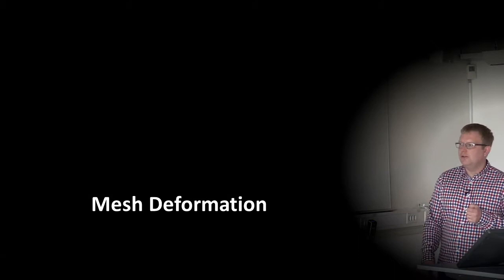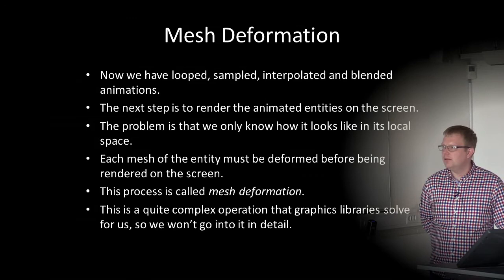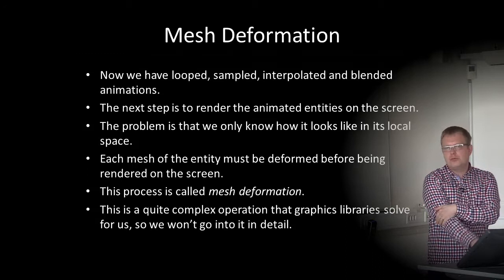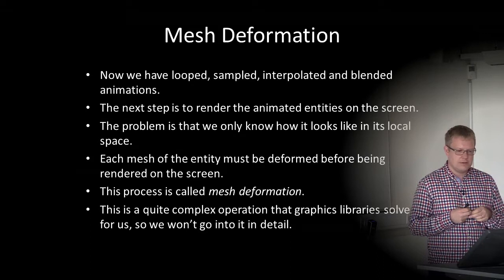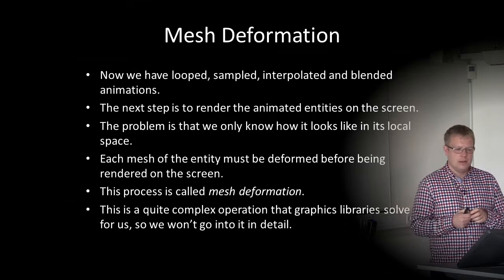When animating, the final step is to deform the meshes. We have looped, sampled, interpolated, and blended animations — the next step is to render the animated entities on screen. The problem is that we only know how the mesh looks in its local space, so each mesh must be deformed before being rendered because the triangles change when we animate an object. This process is called mesh deformation, and most graphics libraries solve it for us.